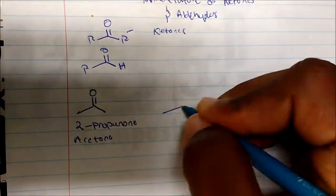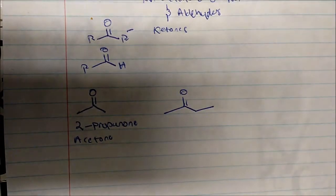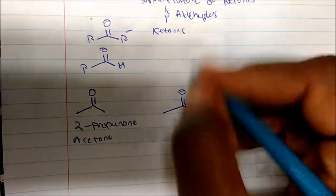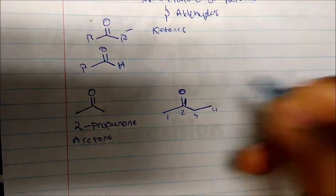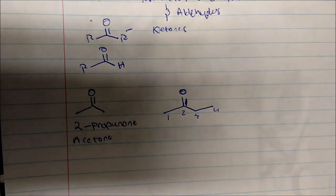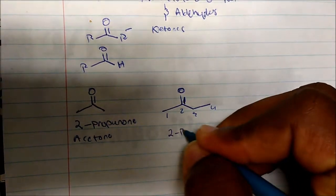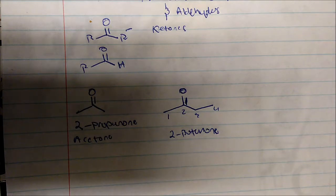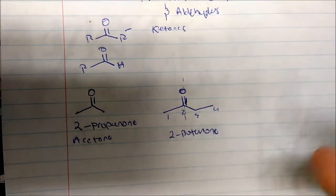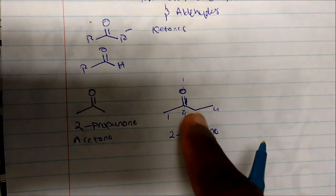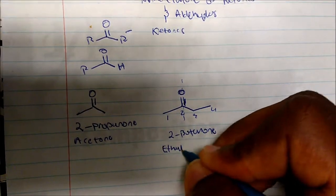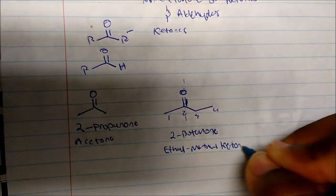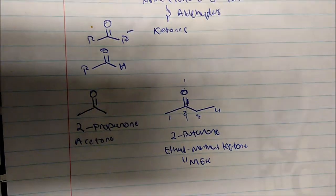What would we name this ketone? We look at our longest continuous carbon chain, and we always want to give the carbonyl the lowest number possible. Starting from here: 1, 2, 3, 4 — the longest chain is butane, but because we're dealing with ketones, it's butanone. The carbonyl is on carbon 2, so this is 2-butanone. The common name: we split the ketone in half and look at what's bonded on either side — an ethyl group and a methyl group — so this is ethyl methyl ketone, or MEK.